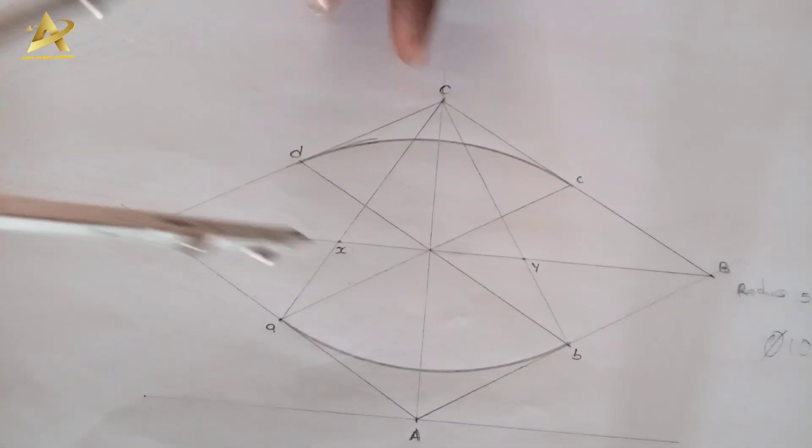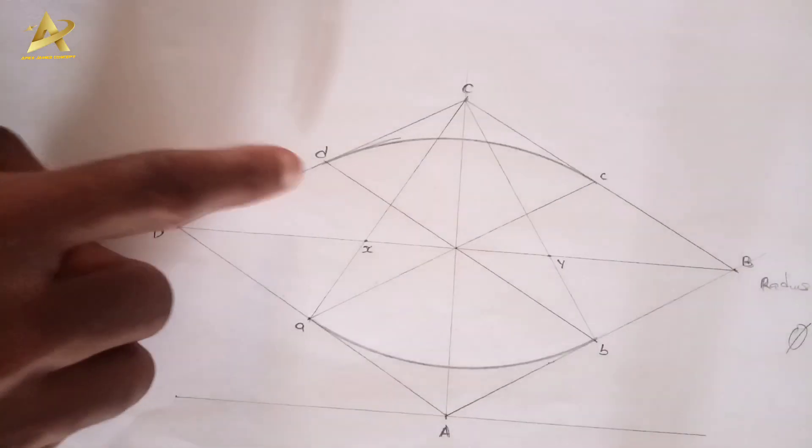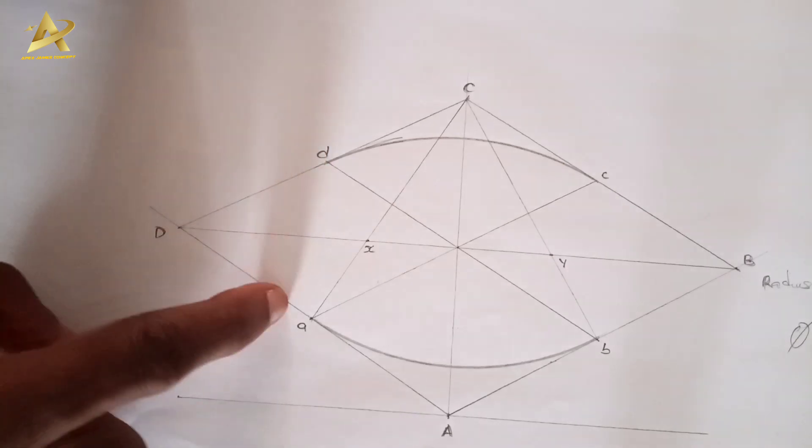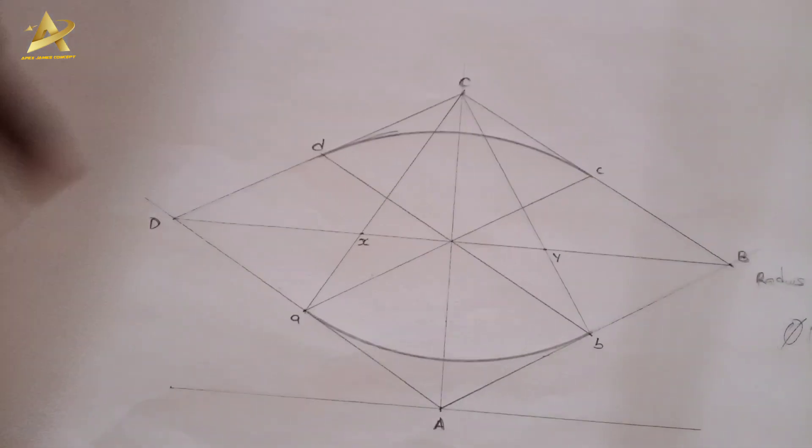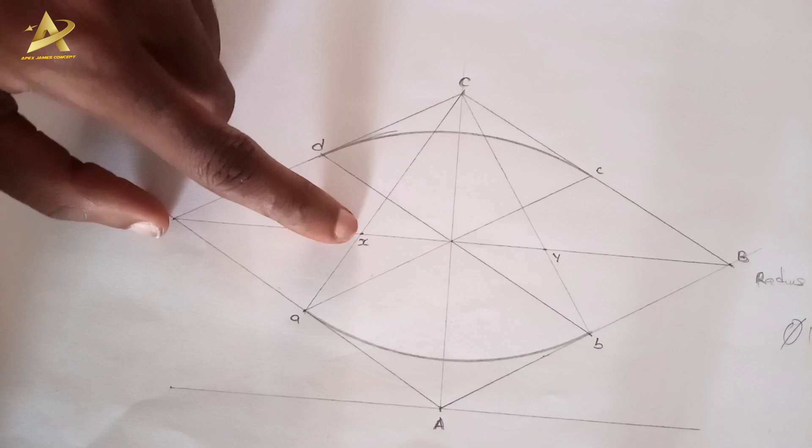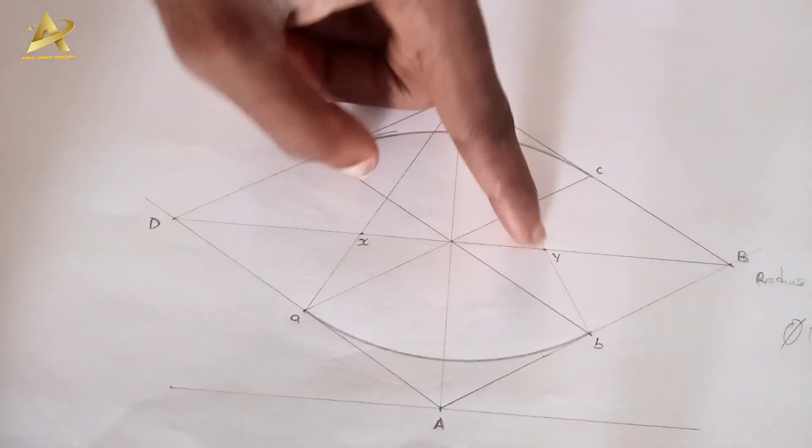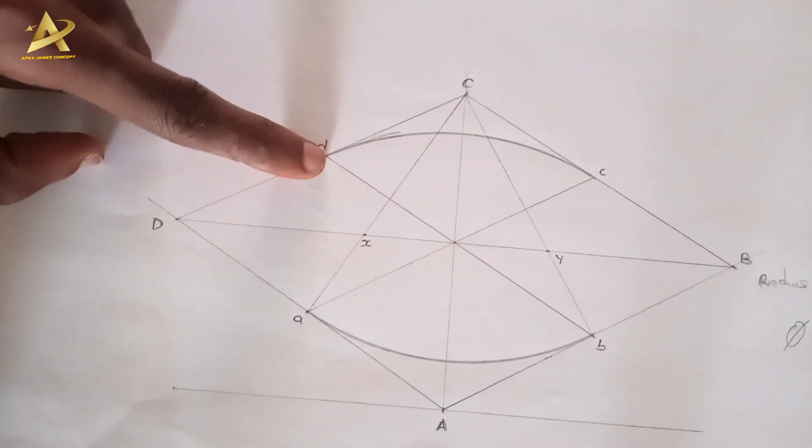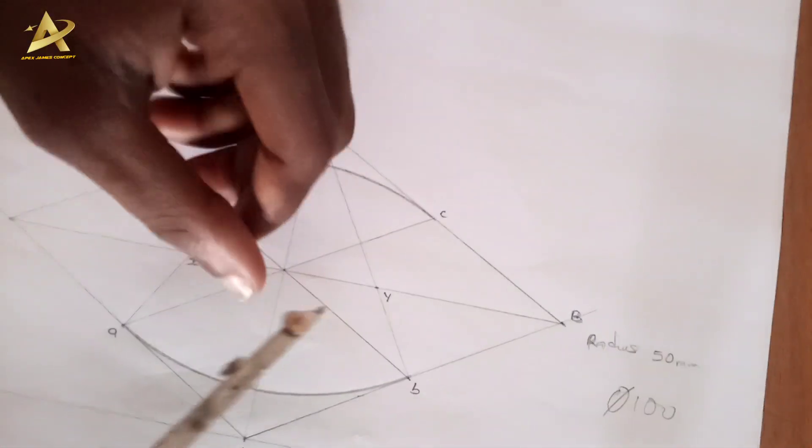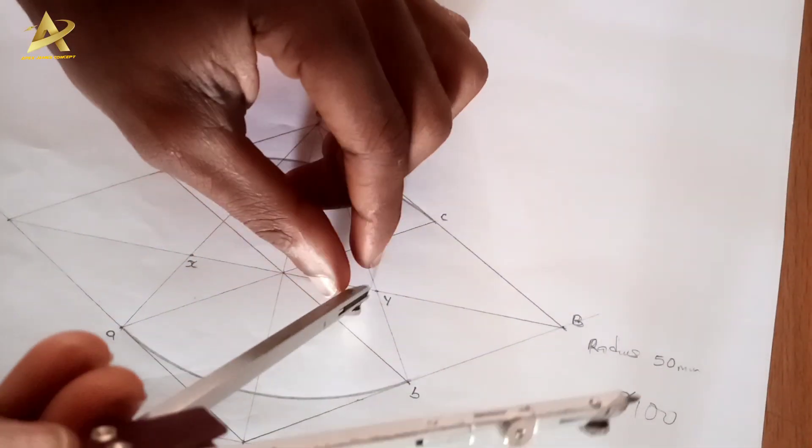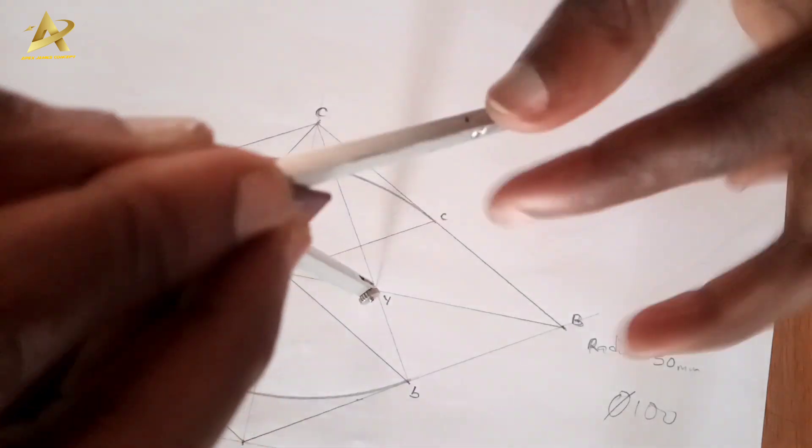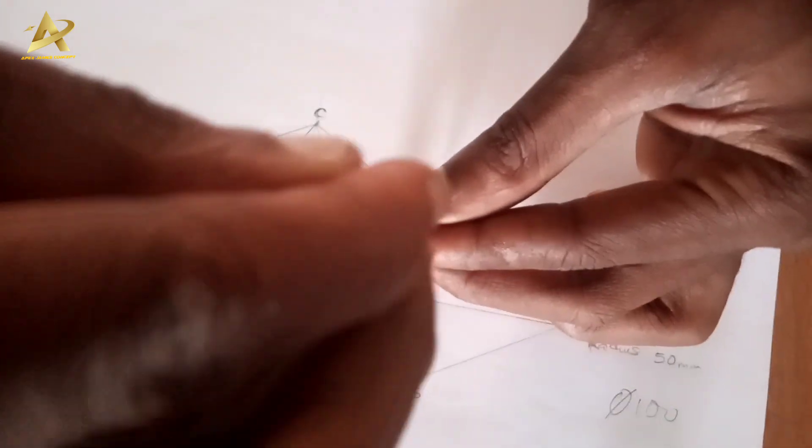To get the arc that will cover this distance, the points X and Y are the centers with radius XD or XE. I'll start with Y. When I get the radius I then draw my arc.